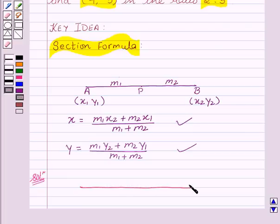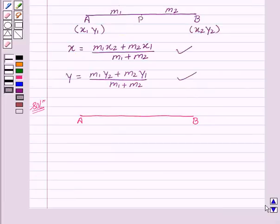So here we can see with the help of a diagram: A, B as the line segment with coordinates of A as (-1, 7) and coordinates of B as (4, -3). And this is the point P whose coordinates we are supposed to find, and the ratio given as 2:3.